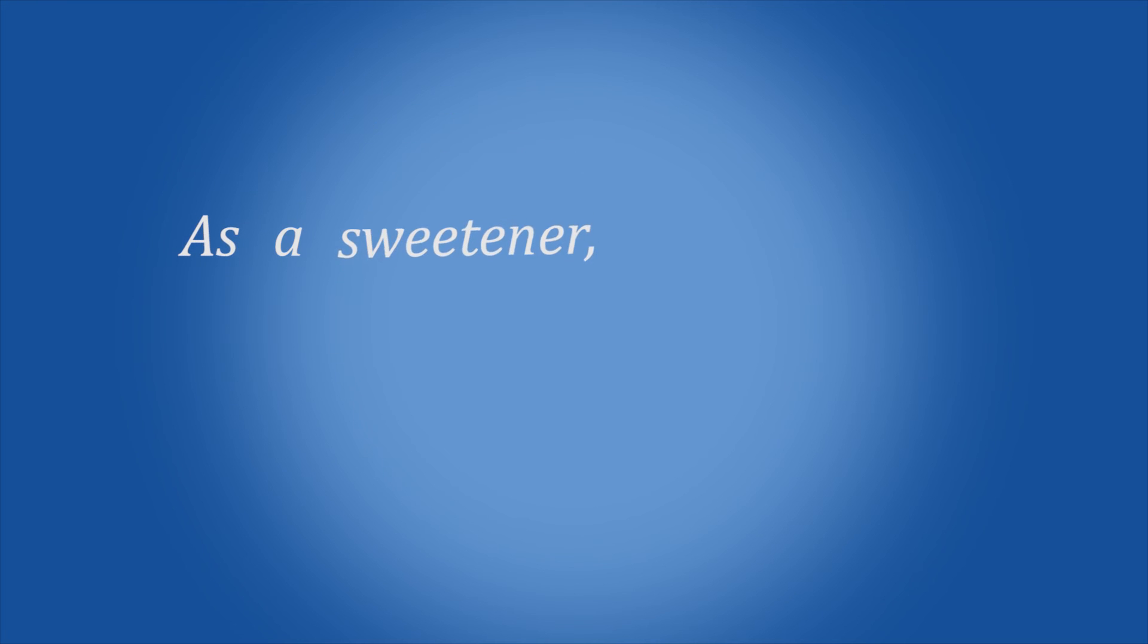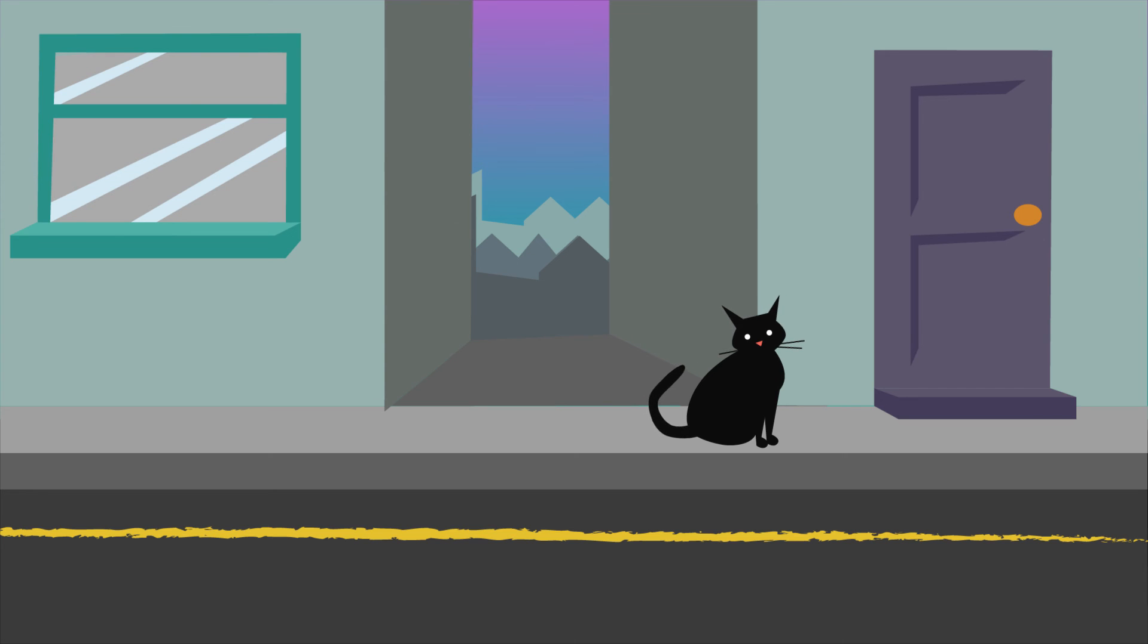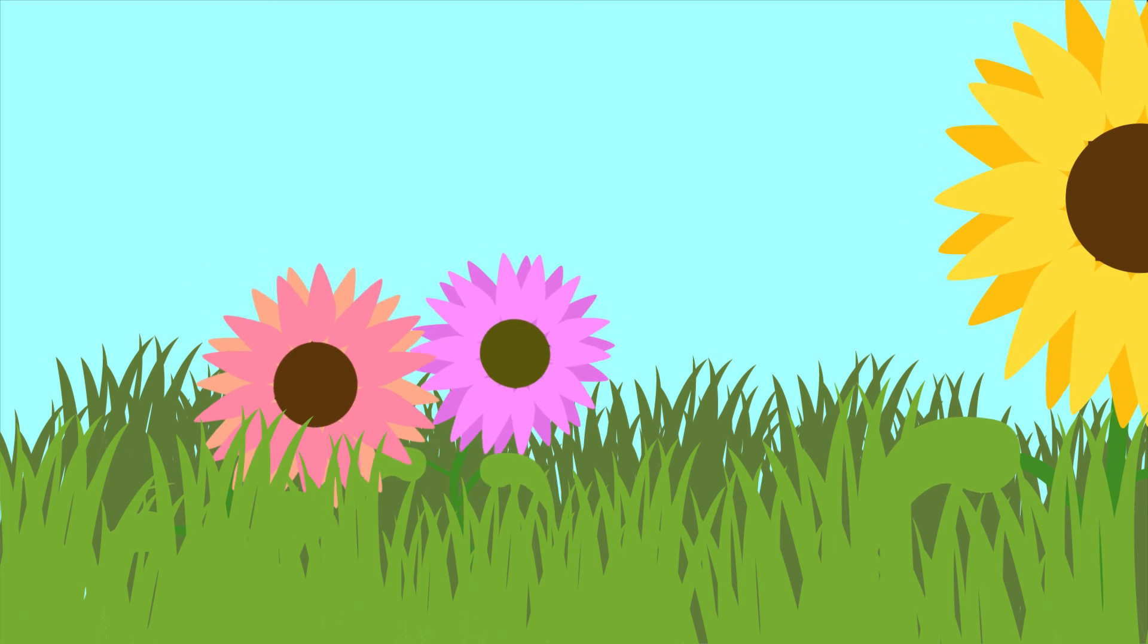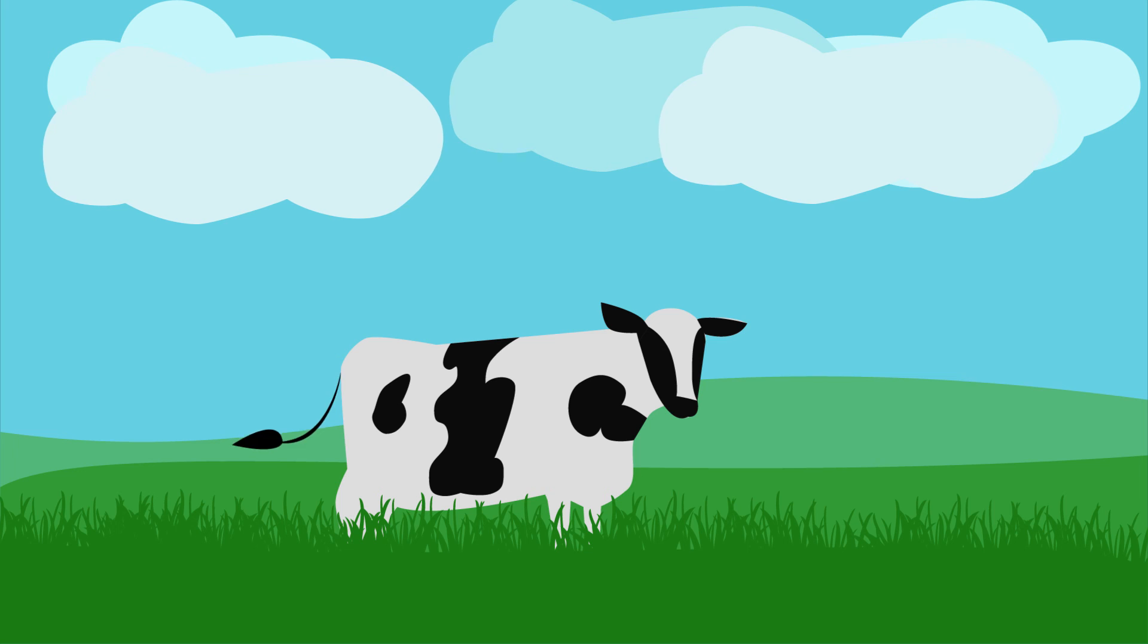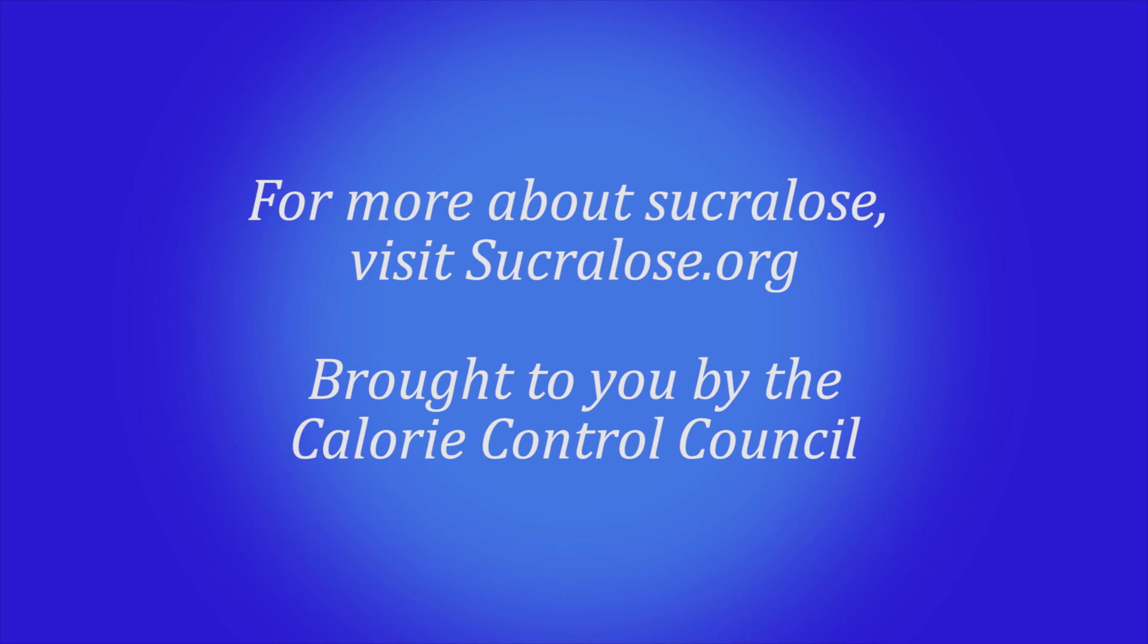As a sweetener, does sucralose have an environmental impact? No. A lot of research has been done, and this shows it's perfectly safe for the environment. Studies conclude that there are no adverse effects to plants or wildlife. It doesn't accumulate in food sources. It doesn't stick around in the body.